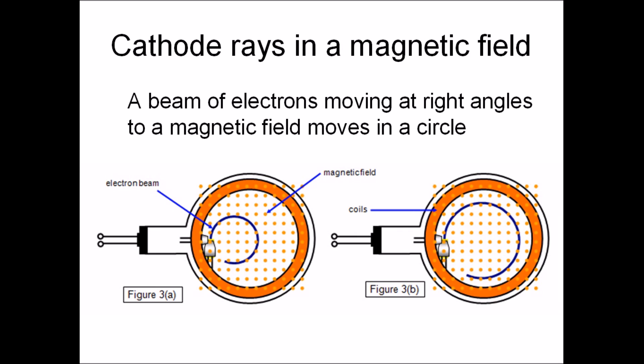When a charged particle enters a magnetic field, it will always move in a circle because the force is always at a right angle to the direction of motion of the particle.